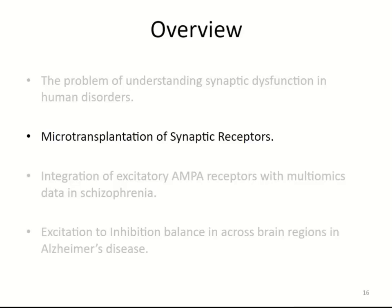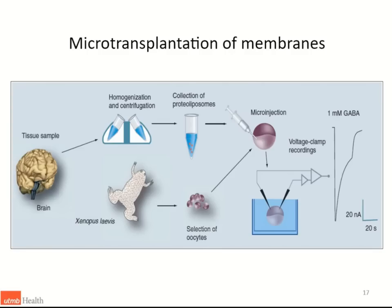Our strategy was developed originally by Ricardo Miledi and has been modified to now transplant synaptosomes, focusing principally on synaptic receptors. For this method, we use brain tissue — either fresh from surgical resection or, most commonly, frozen brain from brain banks. Depending on the type of question we want to answer, we can use about 50 milligrams of tissue, or even go to single slices in a cryostat to isolate synaptosomes.